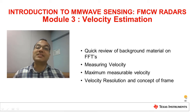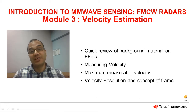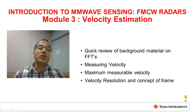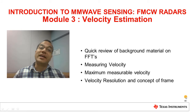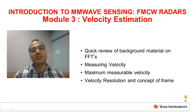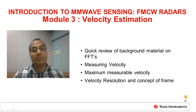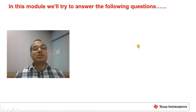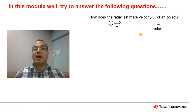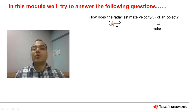Welcome to the third module in this introductory series on FMCW radars. This video is going to be a deep dive into velocity estimation. Like in the case of range estimation in the first module, we are going to be looking at things such as the maximum measurable velocity and the velocity resolution. How does the radar estimate the velocity of an object in front of it?